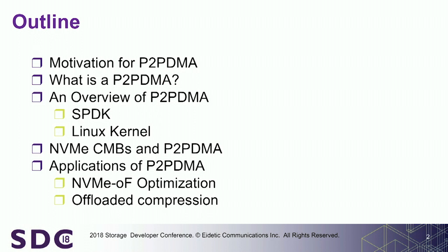I'll talk about the motivation for this — some of you may be very familiar with it and some may not have heard of it at all. I'll explain exactly what Peer-to-Peer DMA is and how it differs from a traditional DMA in a PCIe-based system. I'm going to get down and dirty with some of the APIs we're proposing, so be prepared for actual code. An overview of Peer-to-Peer DMA for both SPDK — Storage Performance Developer Kit — and also the Linux kernel.